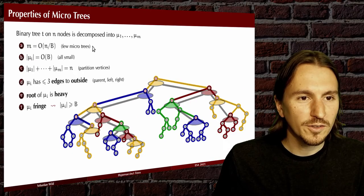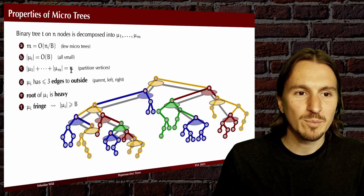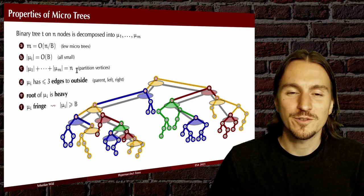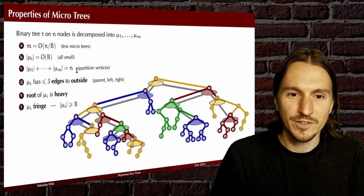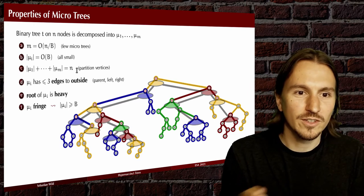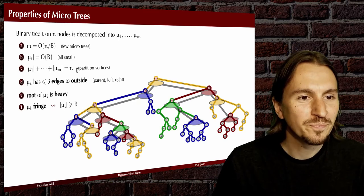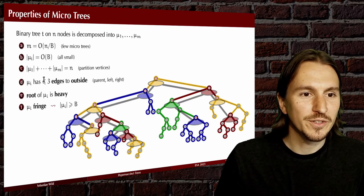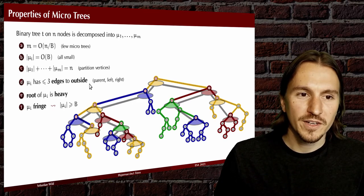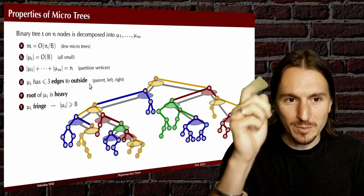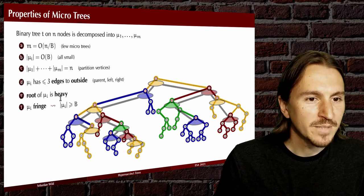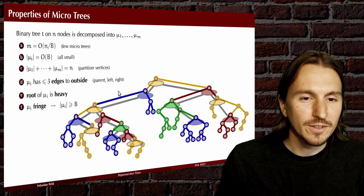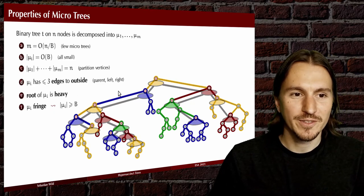We can use that and other insights from the algorithm to prove these properties of the tree decomposition: not too many micro trees, none of them very big, and they actually partition the nodes of the tree. For binary trees we get a partition — every node is in exactly one component. Each component has three edges to the outside — a parent, left, and right edge, or fewer — and the root of a micro tree is always a heavy node.